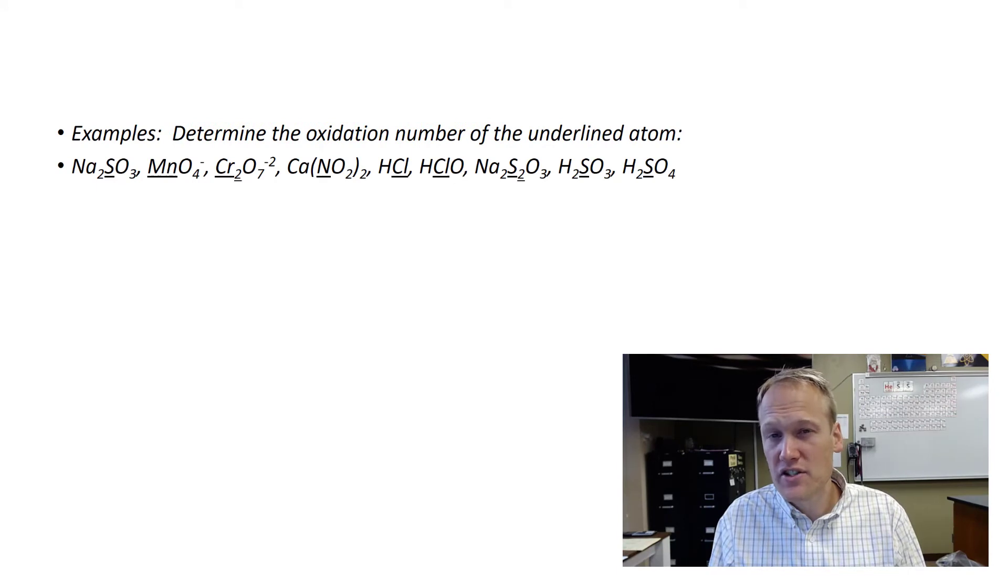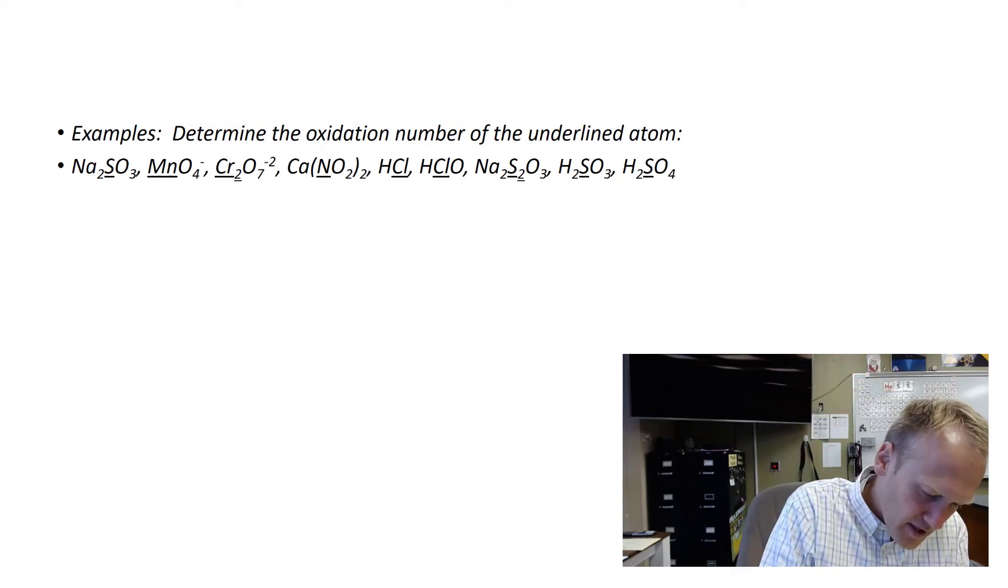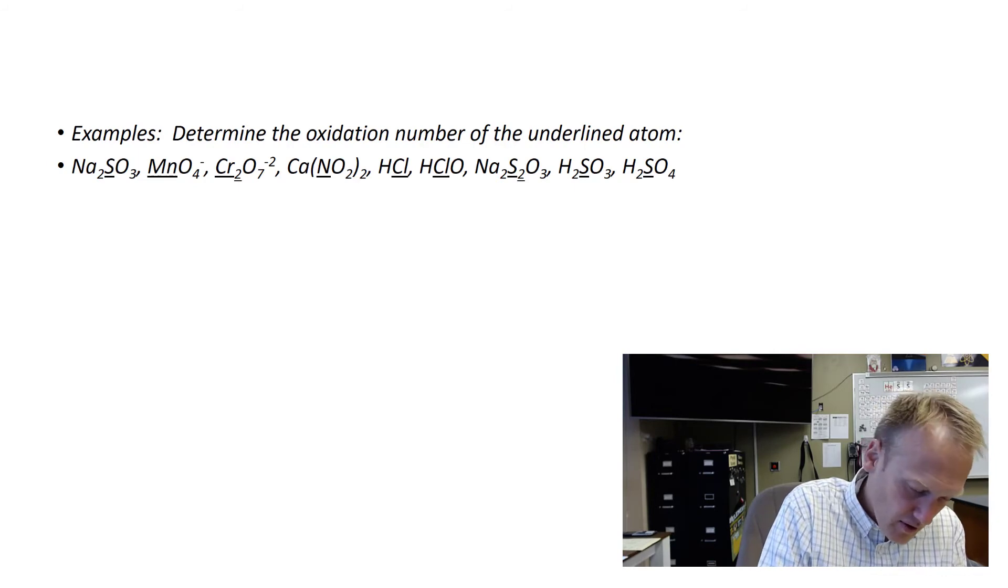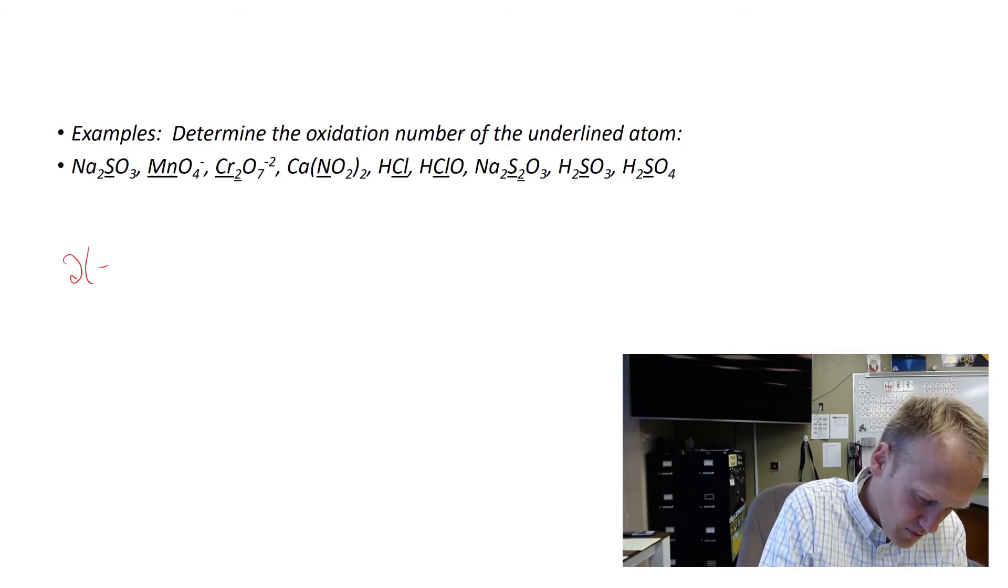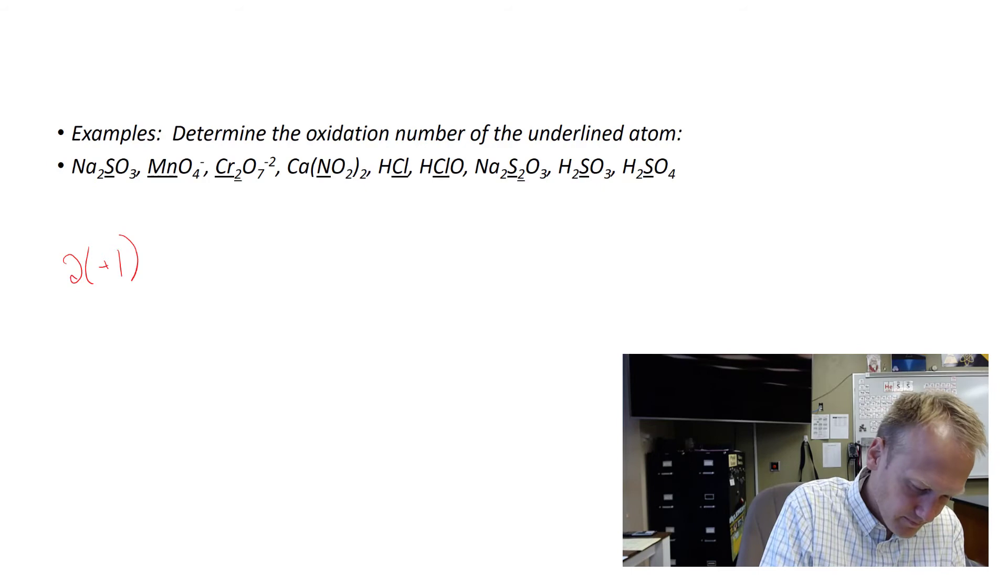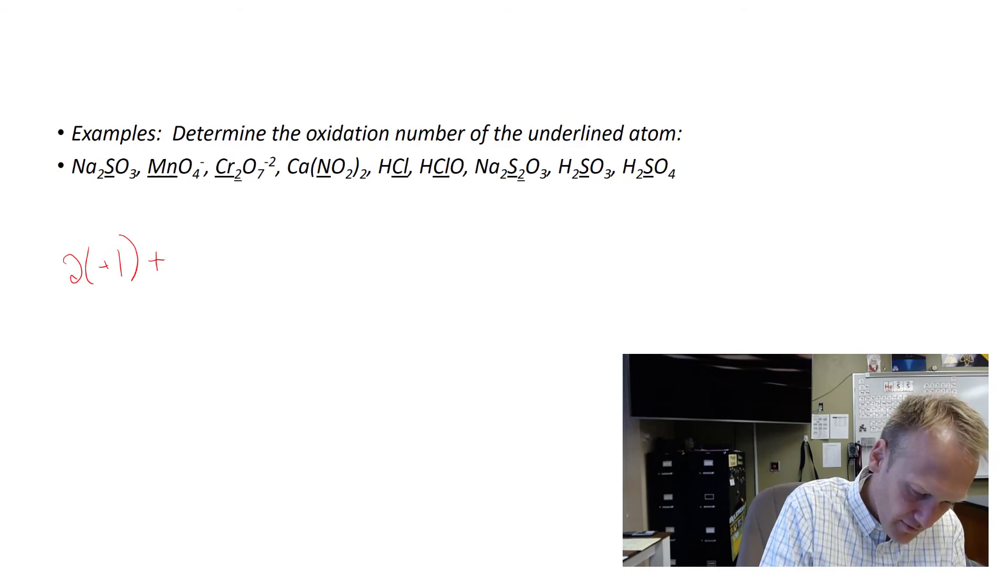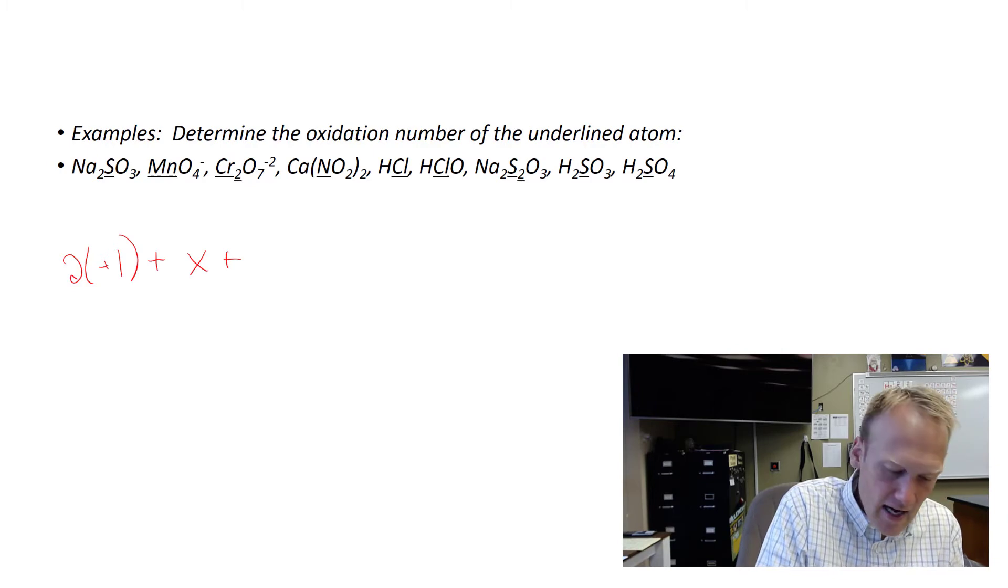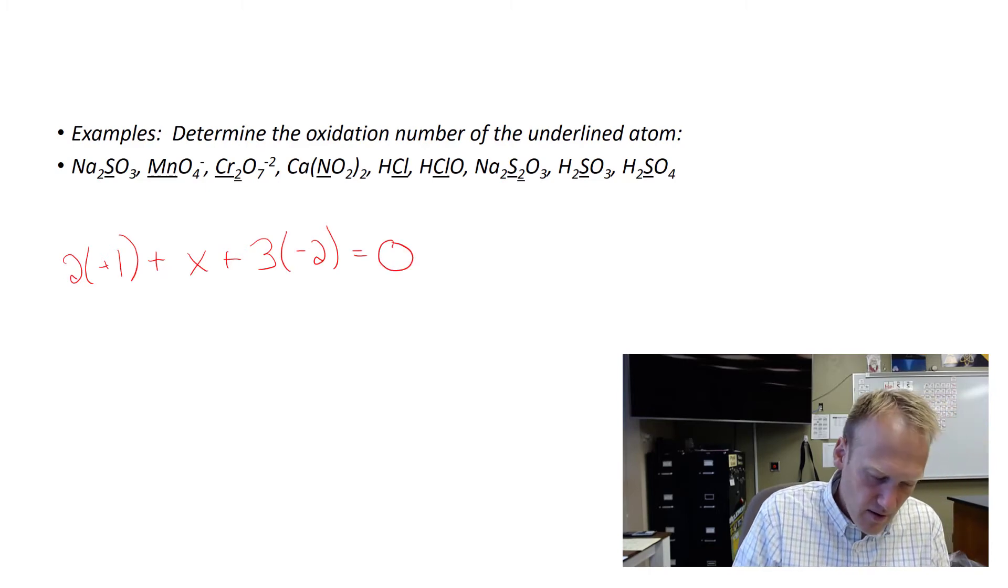Let's try some more examples that don't necessarily use the cation as the unknown. If we look at this one here, we can see that we have two sodium. Sodium is a plus one charge because it's in the first column. We have a sulfur, which we don't know the charge of. And then we have three oxygen. Each oxygen is worth negative two. And we can set that equal to zero.